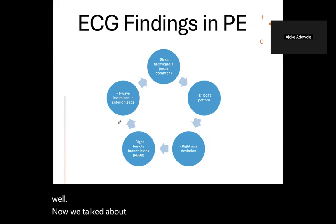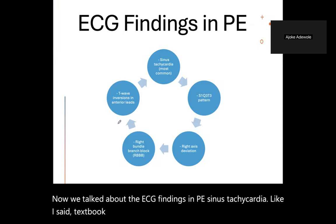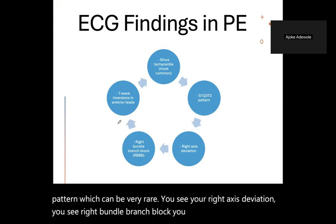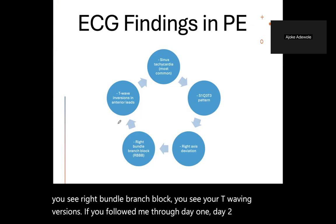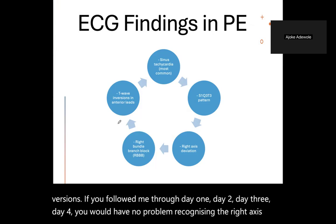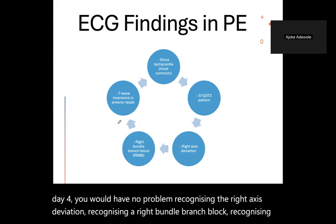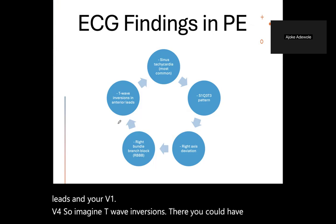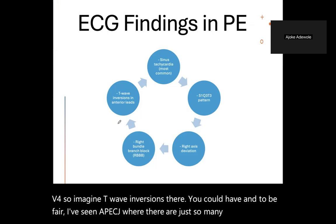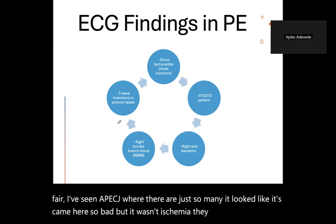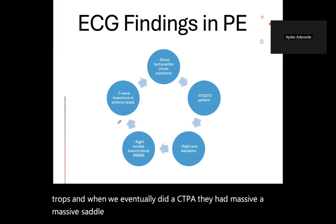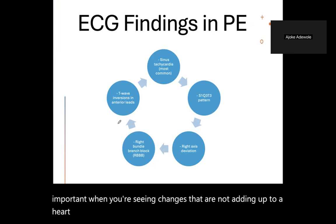ECG findings in PE: sinus tachycardia is most common. You can find the S1Q3T3 pattern, which is rare. You may also see right axis deviation, right bundle branch block, and T-wave inversions in V1 to V4. I've seen a PE ECG that looked so much like ischemia — borderline ST drops — but when we did the CTPA they had a massive saddle PE. So when you see changes that don't add up to a heart attack, consider pulmonary embolism as a differential.